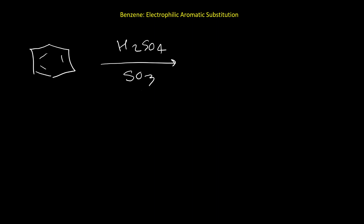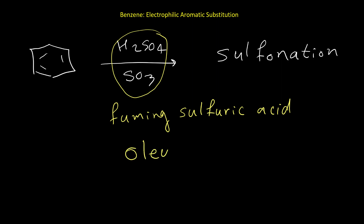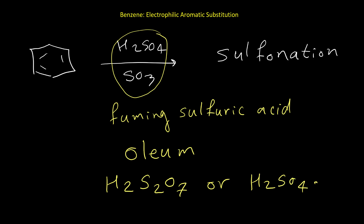The next reaction is sulfonation: benzene reacting with a mixture of sulfuric acid and sulfur trioxide SO3. This mixture is called fuming sulfuric acid, and also has the common name oleum. We may see the reagent written as H2SO4 + SO3, as H2S2O7, or as H2SO4·SO3 — all refer to the same thing, and it produces a sulfonation product.